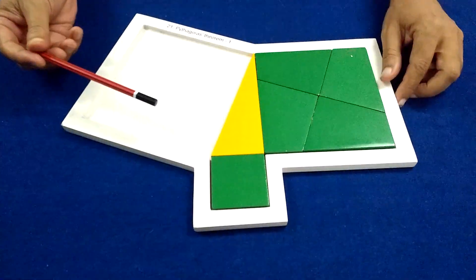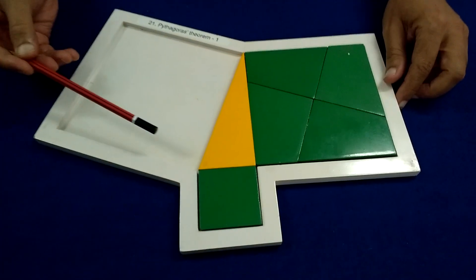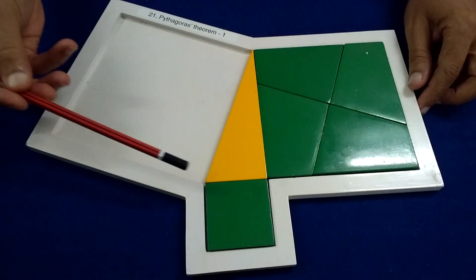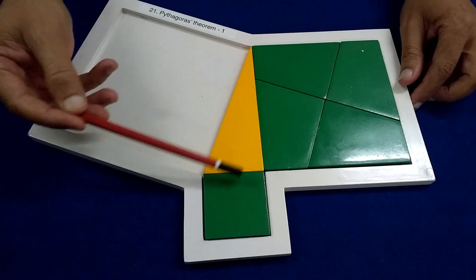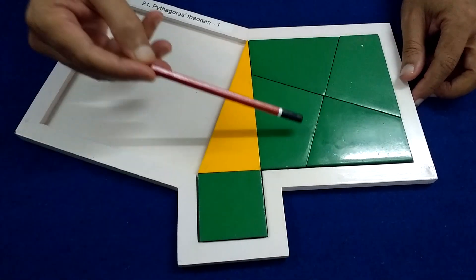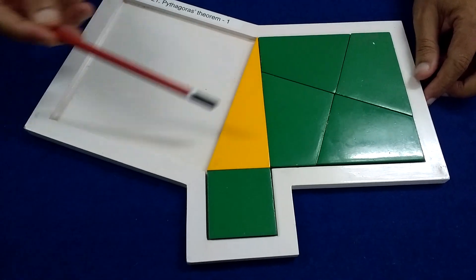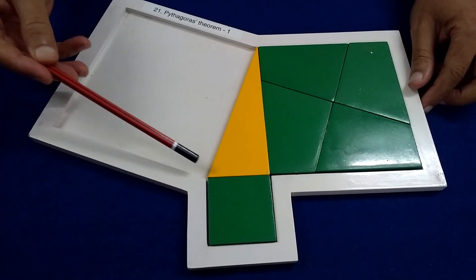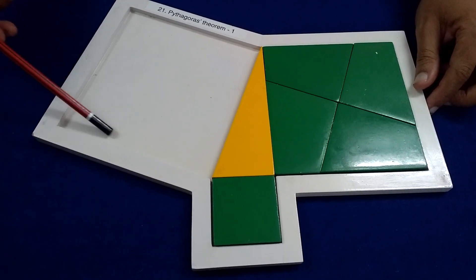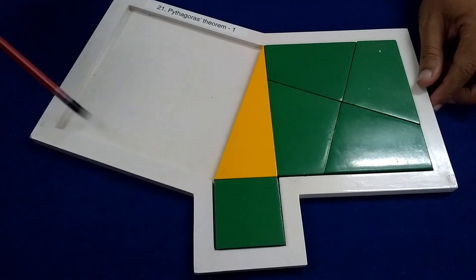The Pythagoras theorem states that in a right angle triangle, the sum of the areas of the squares drawn on the two sides of the right angle triangle is equal to the area of the square drawn on the hypotenuse.